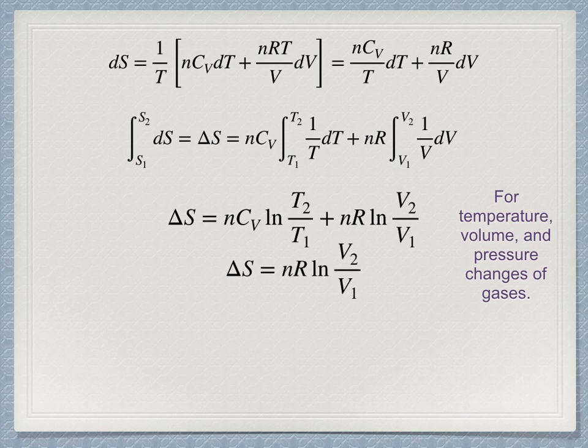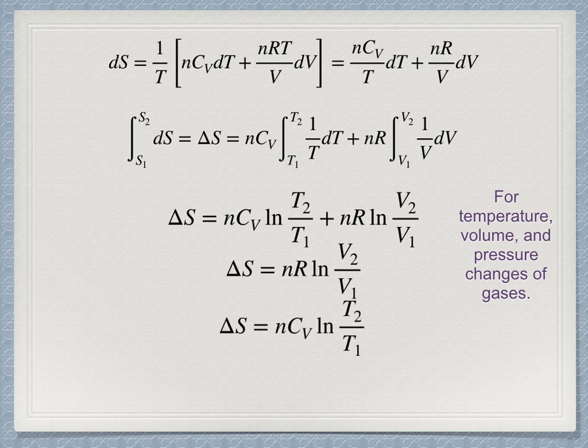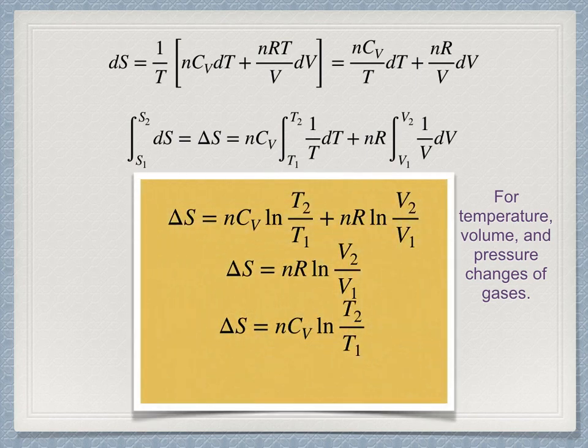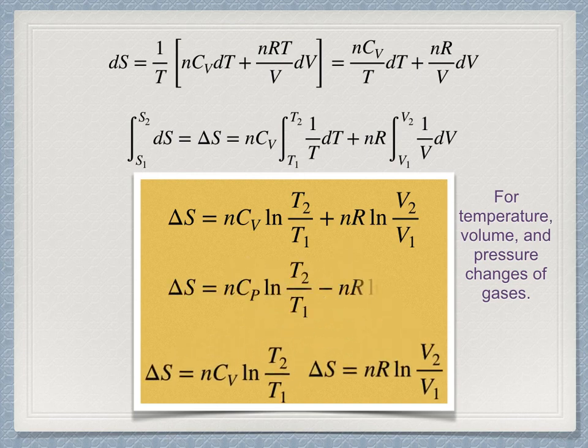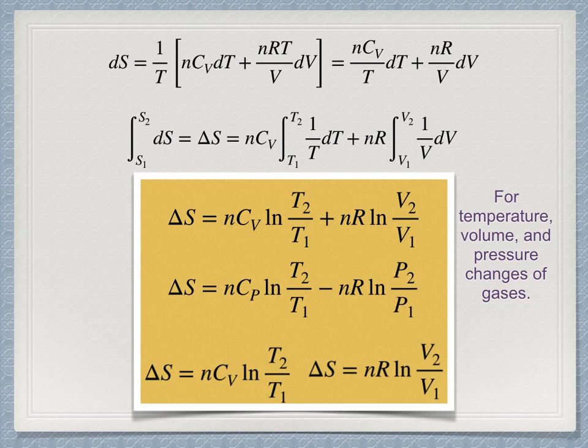And conversely, if the volume is held constant and that's what's called isochoric, then it reduces to this variant of the equation. If we have data for temperature and pressure change, then within the ideal gas paradigm we can rewrite the first equation as this. Note how all of these expressions are how changes of state of gases - temperature, pressure, and volume - can be used to calculate entropy changes of gases.